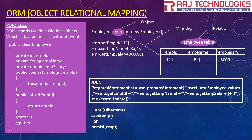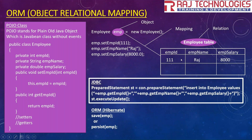To overcome these JDBC drawbacks, we use ORM frameworks like Hibernate. In Hibernate, we simply use predefined API methods like save() and pass your object, or persist() and pass your object. When we call save() or persist(), the complete object data gets inserted into the employee table. Here, emp is an object and the employee table is a relation — so mapping between an object and a relation is called Object Relational Mapping. Both directions are possible: insert an object into a table, or read a table record back into an object.